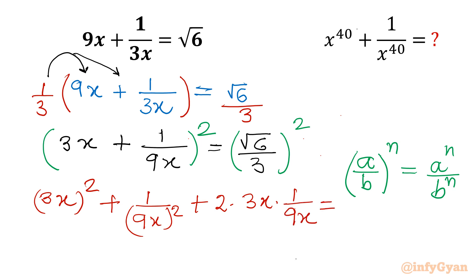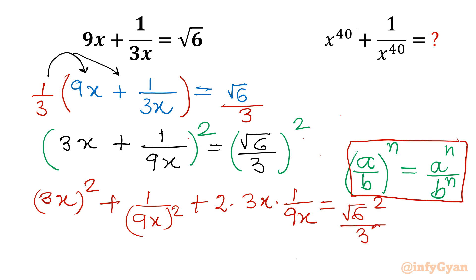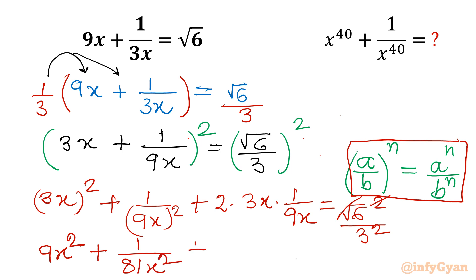And the right hand side, using this property, we can write root 6 squared divided by 3 squared. Now the square root and power 2 cancel. So we will have 9x squared plus 1 over 81x squared. For the 2ab term: I can cancel x with x, and cancel 9 by 3, so 2 times 1 over 3 gives us 2 by 3. The overall value of the 2ab term is 2 by 3.